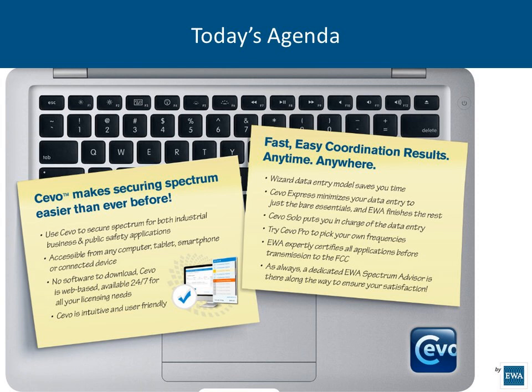We think it's pretty intuitive and user-friendly. It is wizard-based, so a lot of our members will appreciate that, as opposed to the Form 601 where you start at Field 1 and go all the way through to the end. This wizard asks for less information than you would normally provide through direct form entry, because a lot of this information can be predetermined and populated in advance when you create an account through SEVO. With SEVO Express, you provide as much information as you have, click a button, and say please finish off for me.